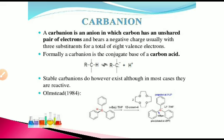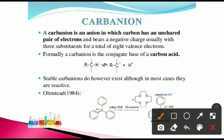What is the carbanion? A carbanion is an anion in which the carbon has an unshared pair of electrons and bears a negative charge, usually with three substituents, for a total of eight valence electrons. Formally, the carbanion is the conjugate base of a carbon acid. To form a carbanion, in the RCH group, by removing the hydrogen, there is formation of RC minus — the carbon having a negative charge.